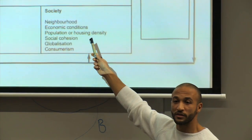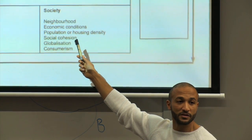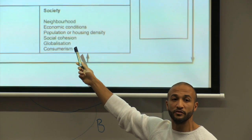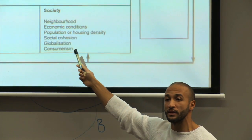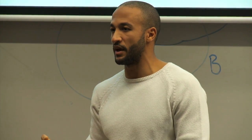Economic conditions — are you poor, middle class, or wealthy? That is likely to influence your outlook on life and your behavior. Social cohesion, globalization, and consumerism — imagine that. The problem is that many of these crimes are dealt with in a very simplistic fashion in society today.